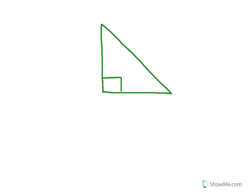Something similar happens with right triangles. If I draw an altitude from the right angle out to the hypotenuse and hit it at a perpendicular, it's inside the triangle. But when I go to the top angle and want to hit the opposite side at a perpendicular, I'm actually traveling down the side of the triangle — so one of the sides is an altitude. The same is true for the third angle. With right triangles, one altitude is inside the triangle, and the other two are actually the two legs of the right triangle.